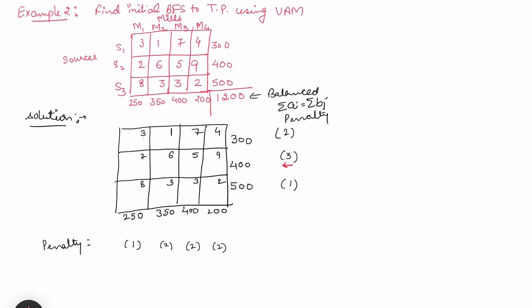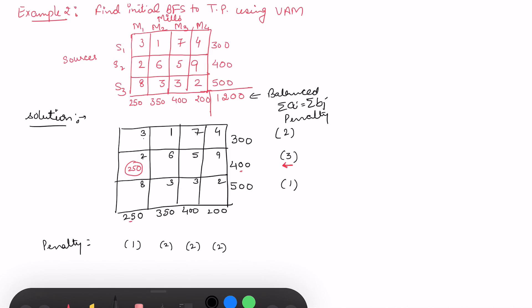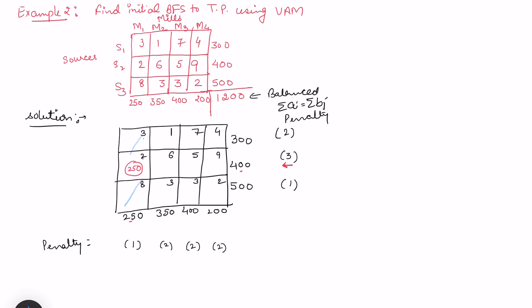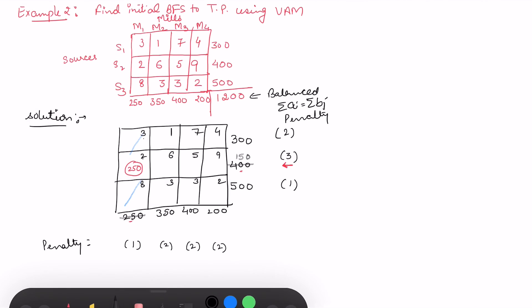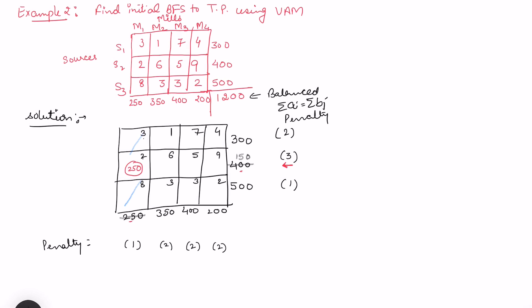The highest penalty occurs in a row, so in that row the least cost is 2 — that is where I want to first allocate. The amount to allocate is the minimum of demand and supply. So 250 will go here. Once 250 is allocated, this column is exhausted, and the remaining quantity in that row is 150.